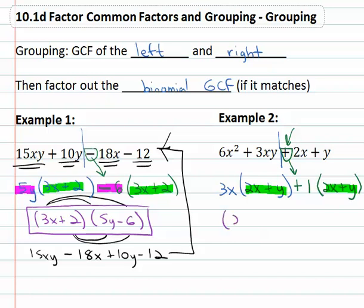Now we notice that 2x + y is in common on both sides. So we'll factor out that common factor of 2x + y, and what's left, 3x + 1, becomes the last factor.